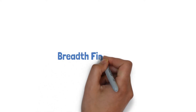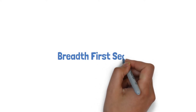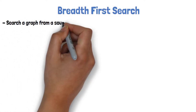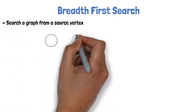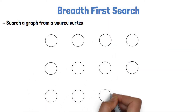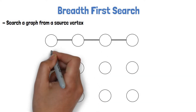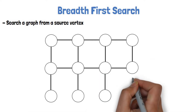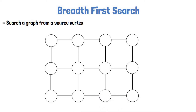In this video we are going to learn about the BFS algorithm, which stands for Breadth First Search. The purpose of the algorithm is to search a graph from a source vertex. Here we have a graph for example, and this vertex S is the source vertex for the graph search.